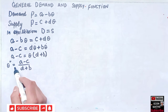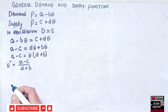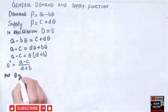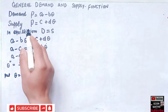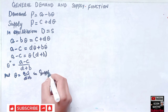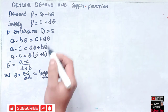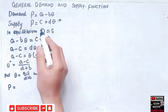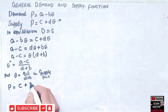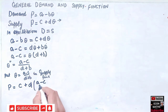To find the equilibrium price, we put Q = (a - C) / (D + B) into the supply function. So the equilibrium price equals C + D times (a - C) / (D + B).